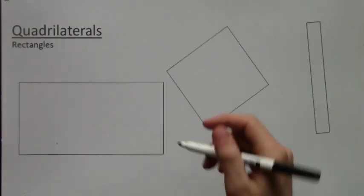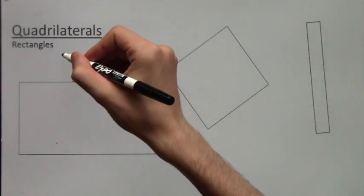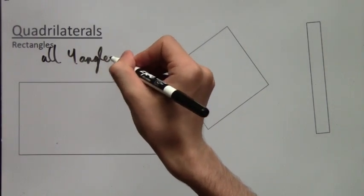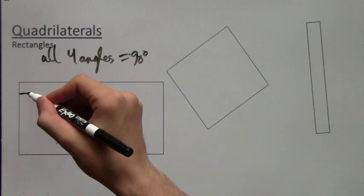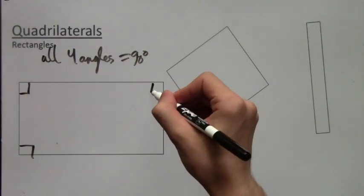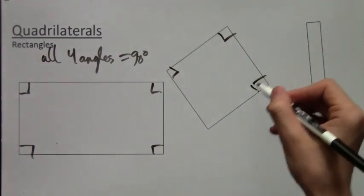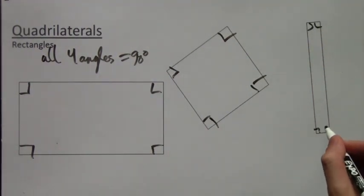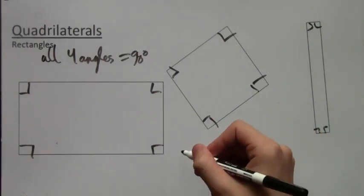Next on the list is rectangles. So rectangles are actually quadrilaterals that have four angles equal to 90 degrees. You probably recognize rectangles. So here I'm marking, this is what a 90 degree angle is marked as with a little box. And all four of them have to be 90 degrees for it to be called a rectangle.